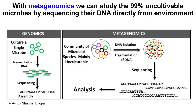In metagenomics, we try to study the uncultivatable microbes. In comparison to normal genomics where we take a bacteria, clone it in the lab, then extract the DNA and sequence it, in metagenomics we take samples from the environment, extract the DNA from all of the species at the same time, and then sequence and analyze them.